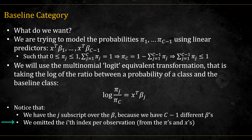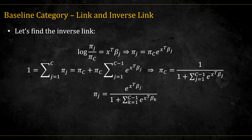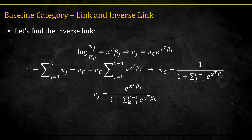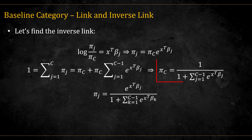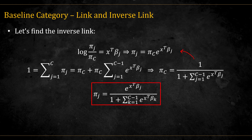I've omitted the i-th index per observation that should have been in the pi's and the x's. We can use this model to find out how the probabilities relate to the linear predictor. We invert the relations to get this expression, then using the fact that the sum of probabilities equals 1, we isolate pi_c. Plugging it back into the previous equation, we get that pi_j is equal to the resulting expression.